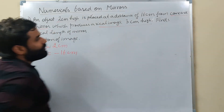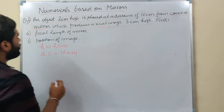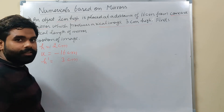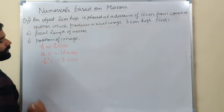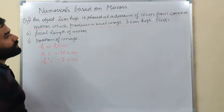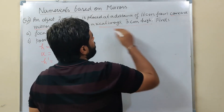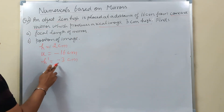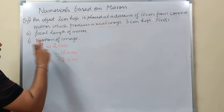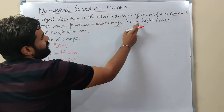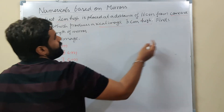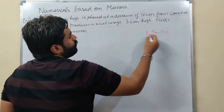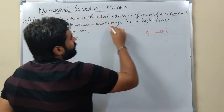Writing given quantities: object height h = +2 cm (object is always above principal axis, so positive). Object distance from concave mirror = 16 cm, on the left side so u = -16 cm. This time they said 'real image' and gave image height = 3 cm. But remember sign convention - real image means inverted, so h-dash = -3 cm.